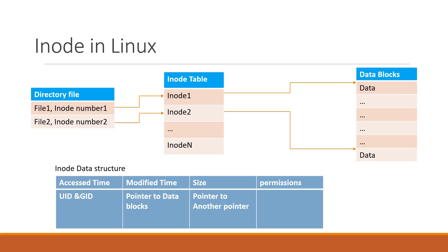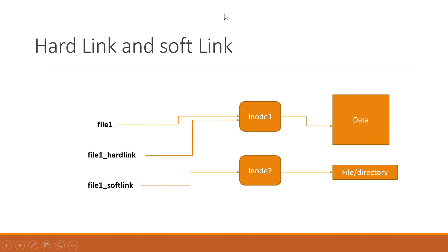Now let us understand what is a hardlink and softlink. Hardlink and softlink are special files in the Linux file system that point to another file or directory. If I create a file, it will have its own INODE and corresponding data. If I create a hardlink for this file, the hardlink will use the same INODE as the original file. This means if I delete the original file, the data will not be deleted because this INODE is still used by the hardlink. Using hardlinks, we can create multiple files that all use the same INODE, meaning all will contain the same data. If any update to any of the files happens, all other files will be updated as well because all are using the same INODE.